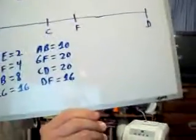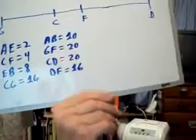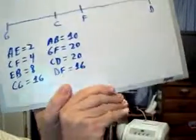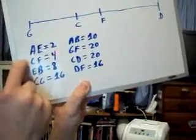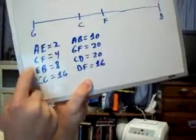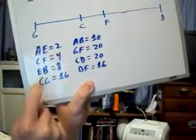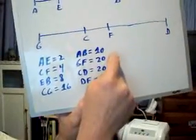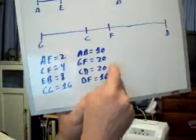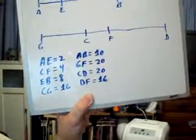This is Euclid Book 7, Proposition 7. Down here it says AE is 2, CF is 4, EB is 8, CG is 16, AB is 10, GF is 20, CD is 20, and DF is 16.